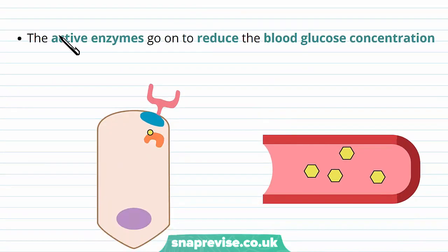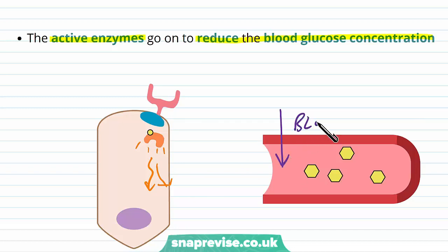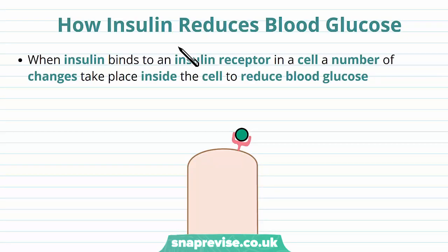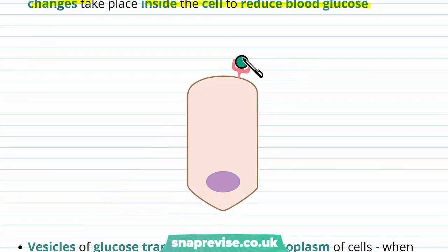These active enzymes are what bring about the reduction in blood glucose concentration. They can do various things so that the blood glucose can be brought down. Once the insulin is bound to its receptor in a cell, a number of changes take place inside the cell in order to bring the blood glucose back down. Remember, the insulin has bound to its receptor because it can't pass through the cell, and this sets off a chain of events.